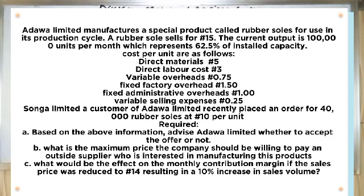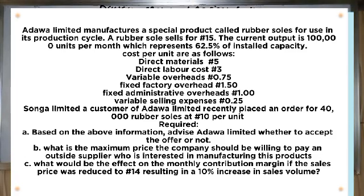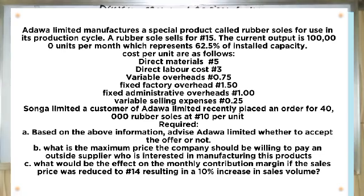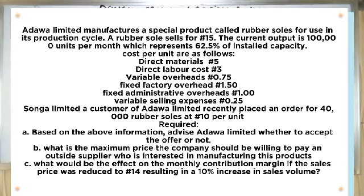Adawa Limited manufactures a special product called rubber soles. A rubber sole sells for 15 naira. The current output is 100,000 units per month, which represents 62.5% of installed capacity. Cost per unit of production: direct materials 5 naira, direct labour 3 naira, variable overheads 0.75 naira, fixed factory overhead 1.50 naira, fixed administrative overhead 1.0 naira, variable selling expenses 0.25 naira — total 11.50 naira.